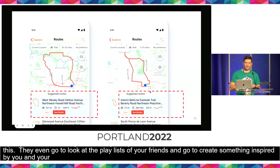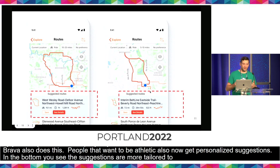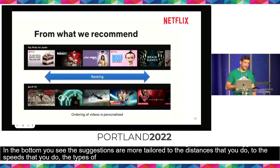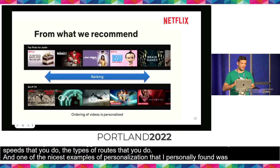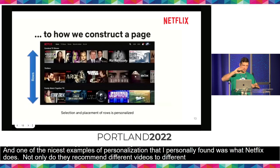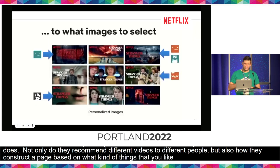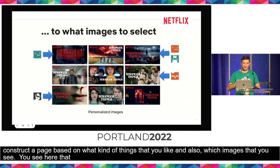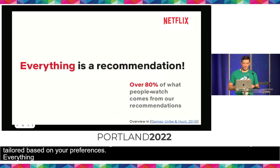Strava also does this. People that want to be athletic now get personalized suggestions — suggestions more tailored to the distances that you do, the speeds that you run, the types of routes that you do. One of the nicest examples of personalization I personally found was what Netflix does. Not only do they recommend different videos to different people, but also how they construct a page based on what kind of things you look at, and also which images you see — all these images are the same show but tailored to your preferences. Everything you see on Netflix is a recommendation, and they claim that 80% of what people watch comes from their recommendations.